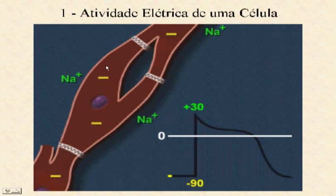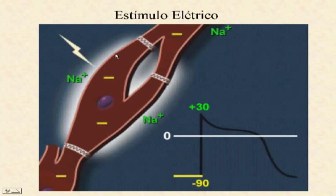Vamos pegar uma célula do músculo cardíaco. Se colocarmos um microeletrodo dentro dessa célula, um potencial negativo de menos 90 milivolts é obtido. O interior de uma célula é mais negativo quando comparado ao exterior devido ao gradiente de íons potássio. A concentração de íons potássio no interior de uma célula é aproximadamente 30 vezes maior do que sua concentração extracelular. Por outro lado, o líquido extracelular possui uma concentração muito maior de íons sódio e cálcio do que no interior da célula.